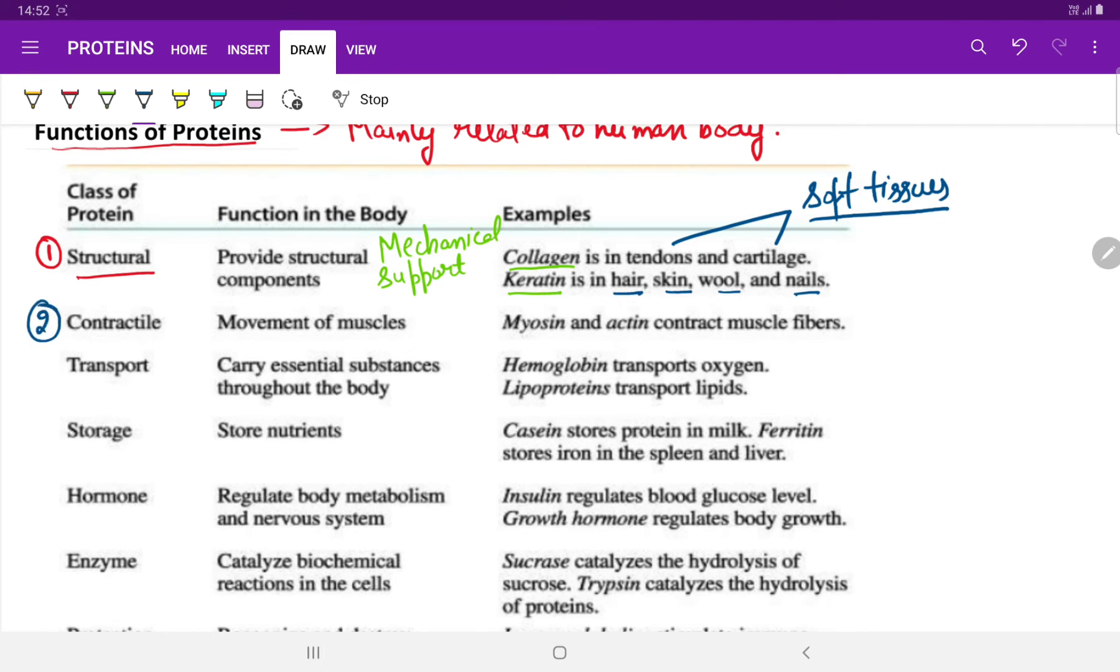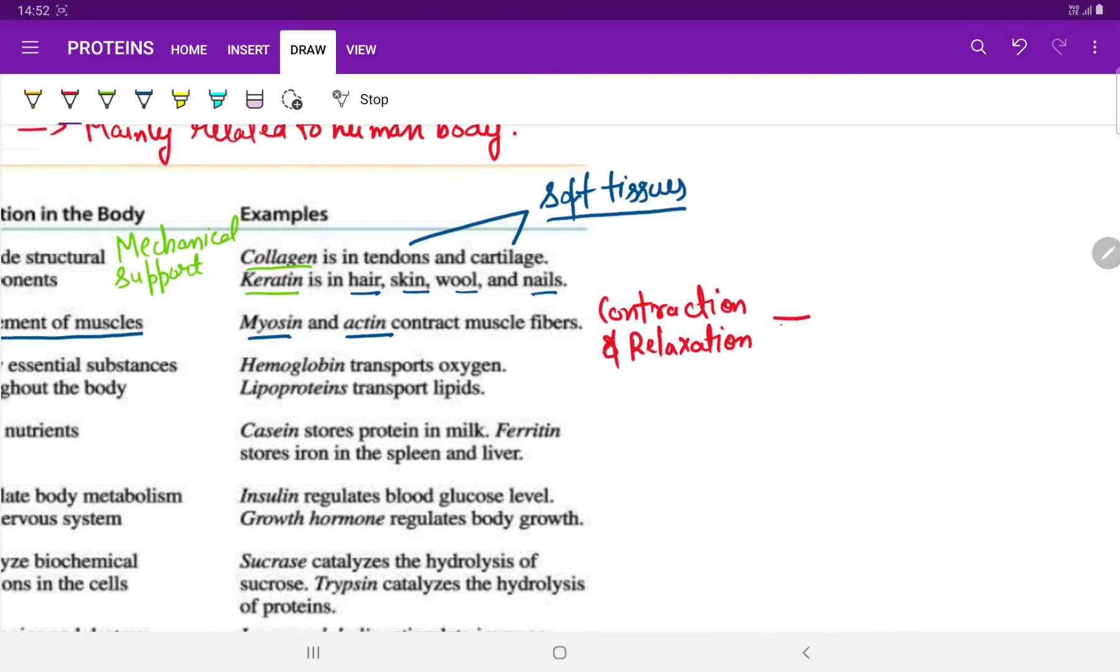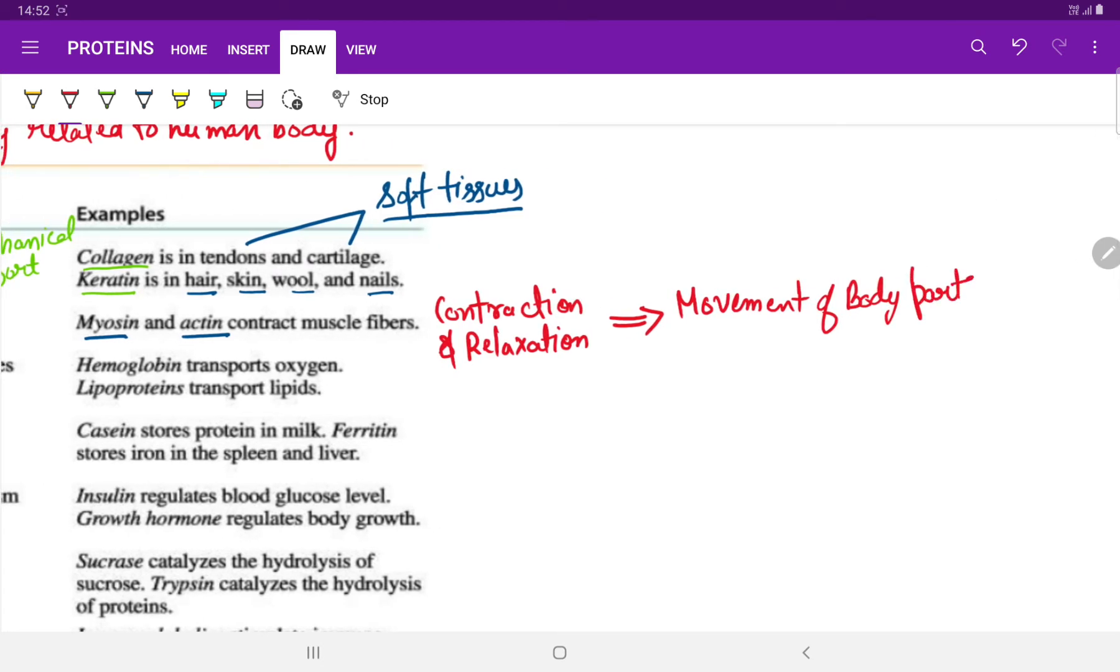The second one is contractile functions that is mainly involved for movement of muscles. The most important types of proteins in movement of muscles are myosin and actin. They perform the contractile functions and help in contraction and relaxation of muscles that helps to perform various body movements and reflexes. The movement of body parts and body reflexes are performed by actin and myosin, which are a type of contractile proteins.